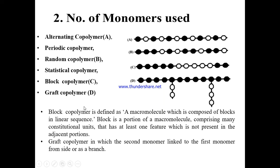In a graft copolymer, the second monomers link to the first monomers from the side as a branch. As shown in figure D, there is a grafting of some monomers or groups of monomers to the main polymer chain. This side-linking of groups of monomers is called grafting. These are the various configurations of polymer molecules based on monomer sequence.